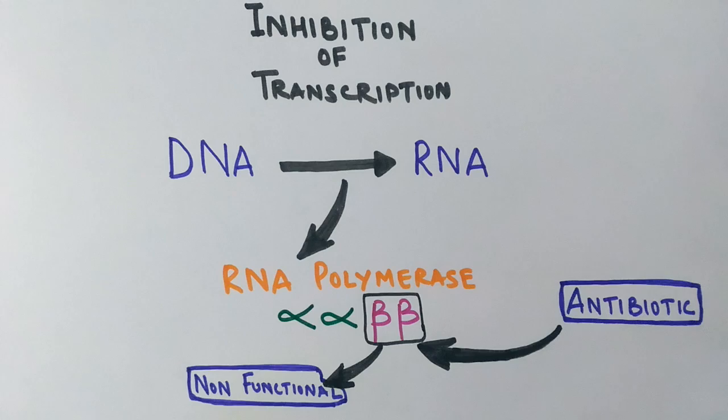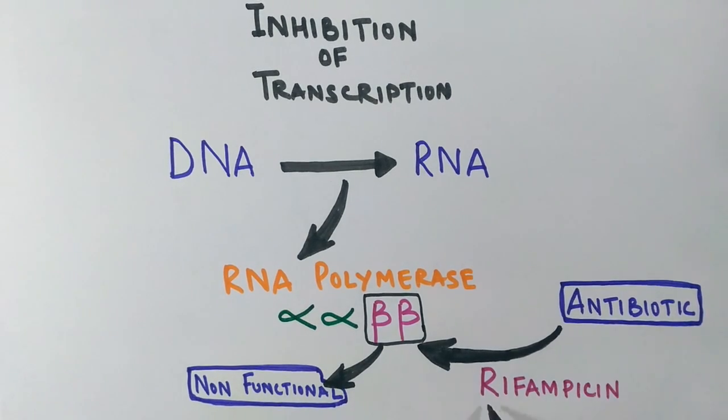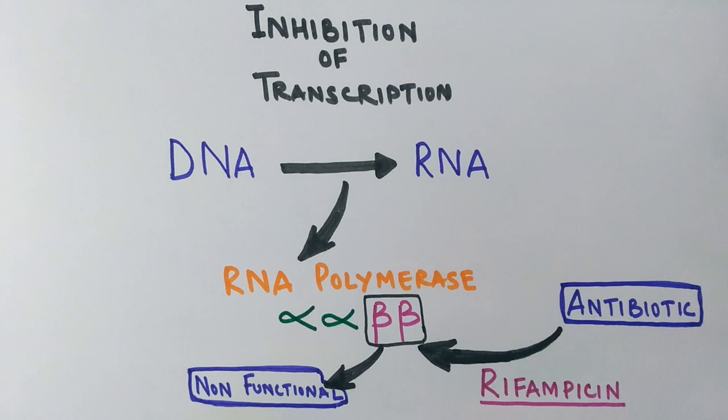The transcription process gets inhibited by antibiotics. Rifampicin is one of the most important drugs that's able to inhibit the transcription of bacteria. Mostly it inhibits the transcription of Mycobacterium and Staphylococcus aureus and many others.